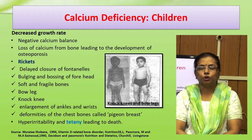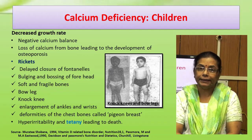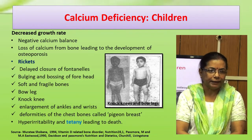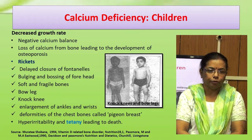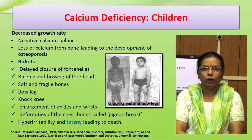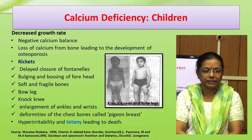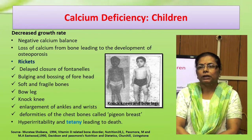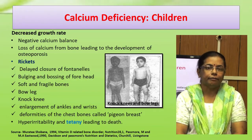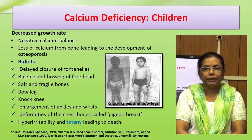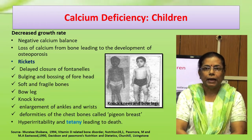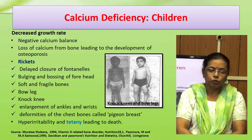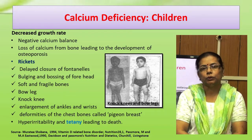Rickets, which is the manifestation of both calcium and vitamin D deficiency, is characterized by craniotabes, delayed closure of fontanelles, bulging and bossing of the forehead, soft and fragile bones, bow legs, knock knees, enlargement of ankles and wrists, and pigeon chest. Teeth of children are also adversely affected; there will be cracks all over the enamel, which may lead to decay of teeth. Deficiency can also lead to hyperreactivity and tetany, which may lead to death.